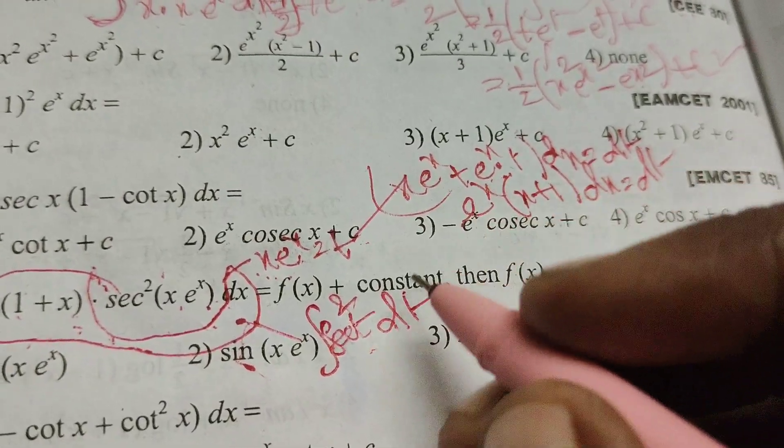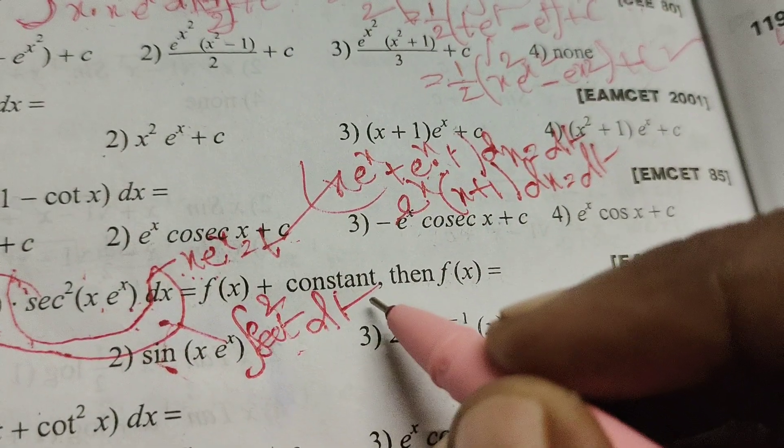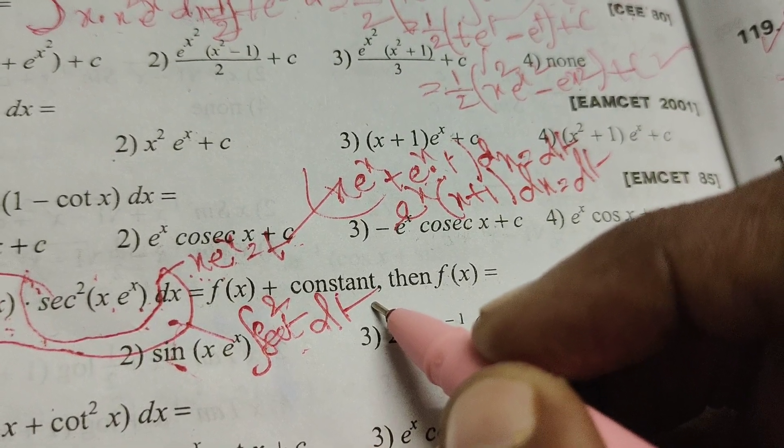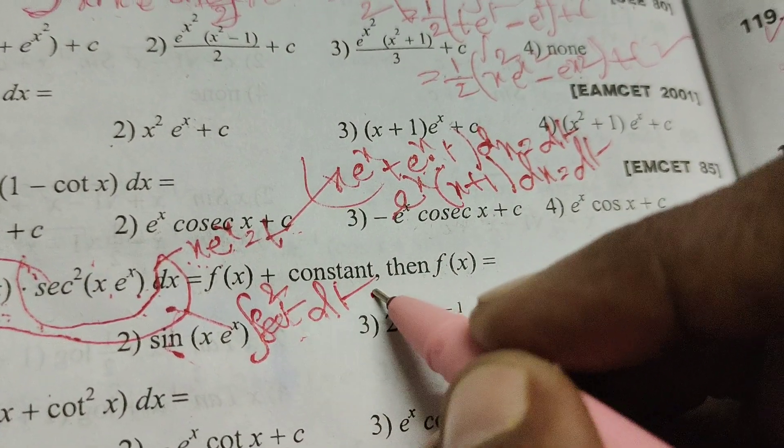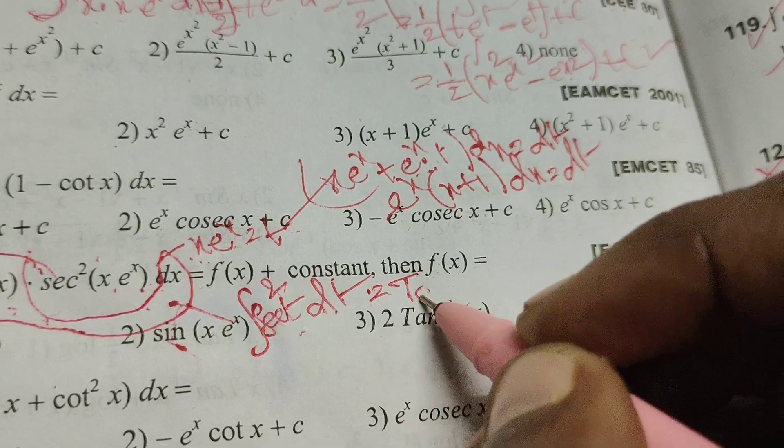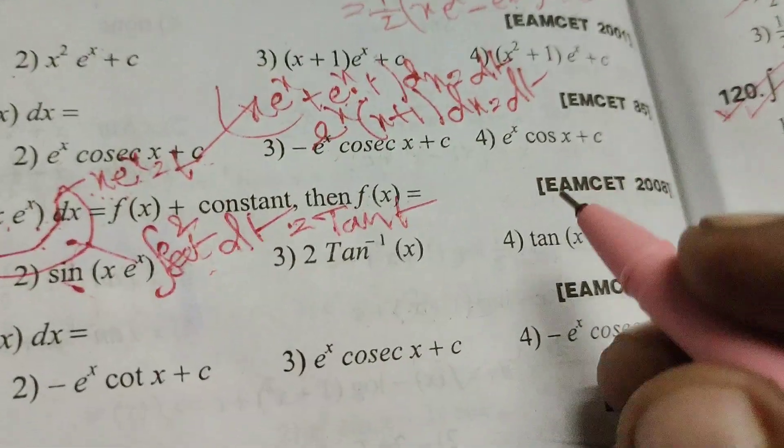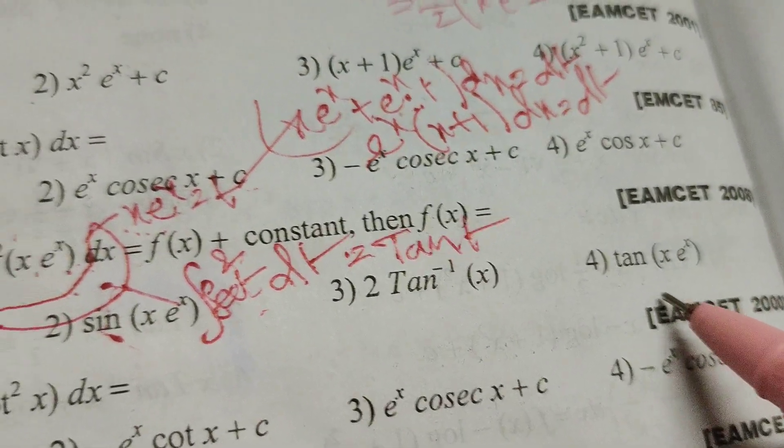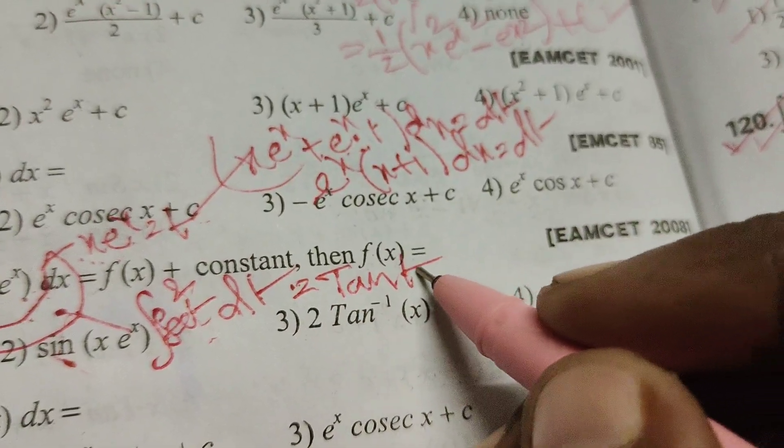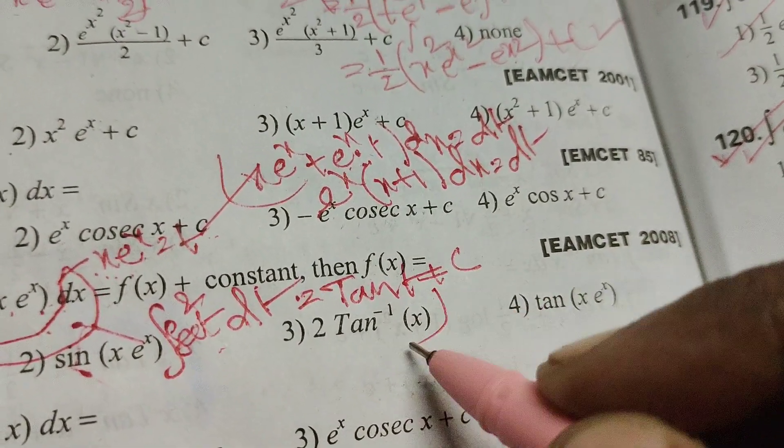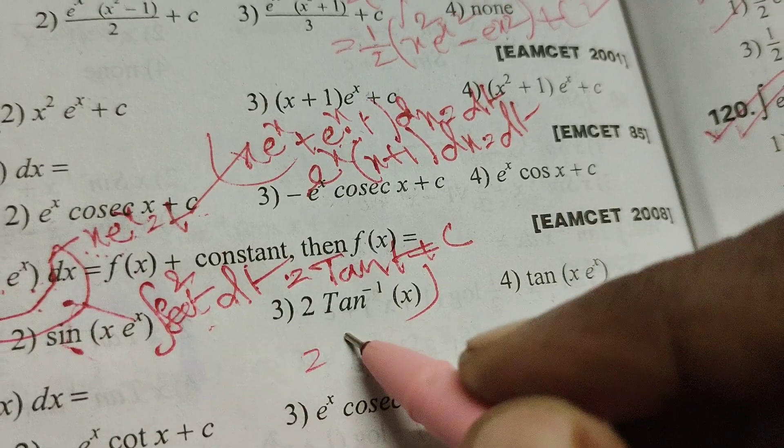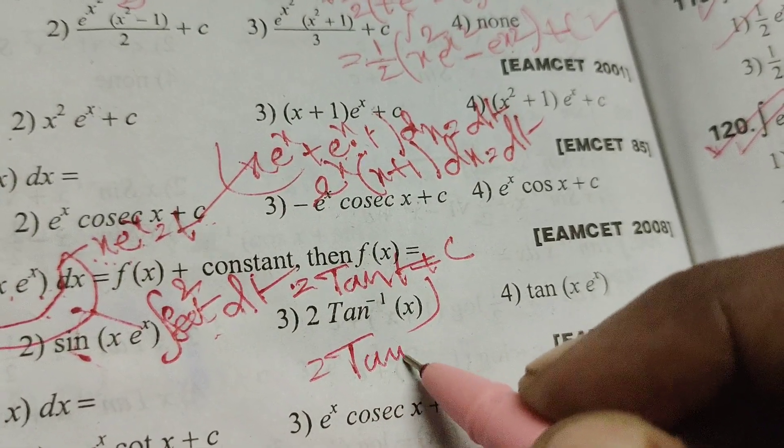What is the integration of secant squared x? tan x. Here in place of x, t is there. Therefore, tan t. After integrating we are adding the constant c. Therefore, t equals to tan of, what is t for substitution?